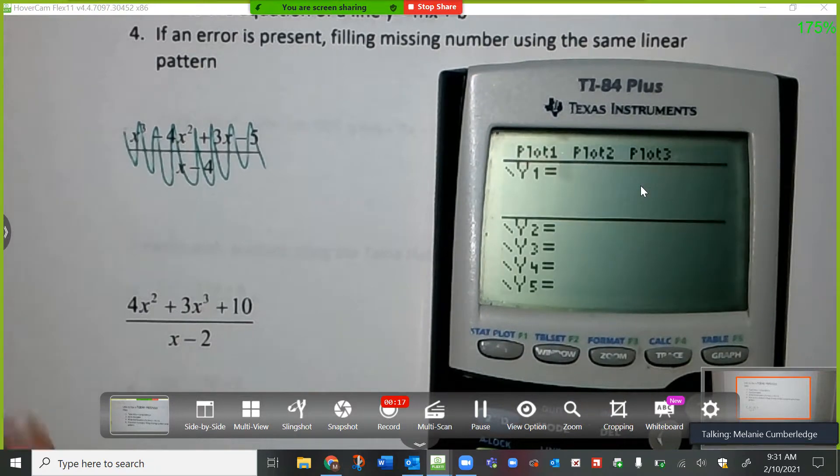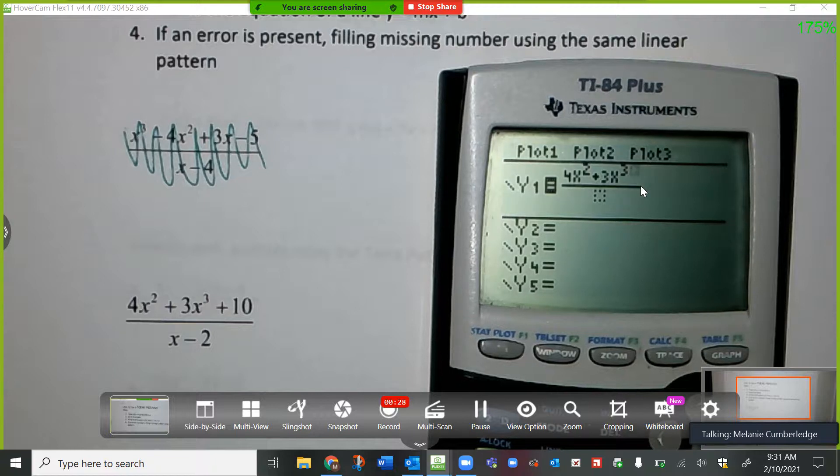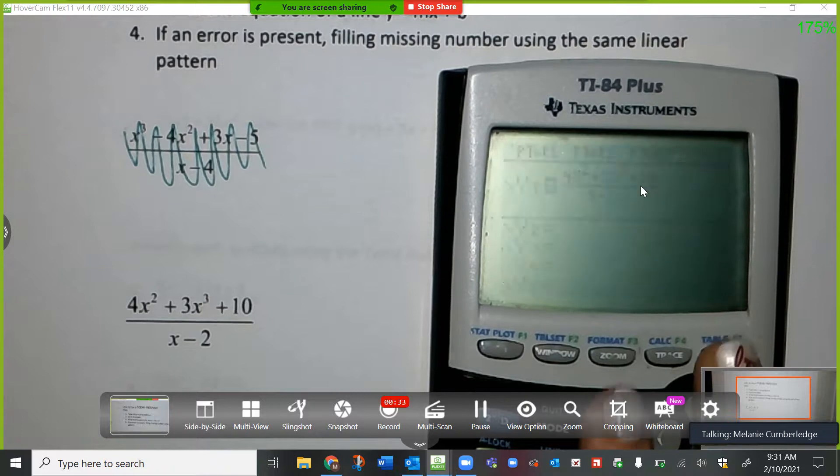So we're going to do alpha y equals enter and you're going to type 4x squared plus 3x, maybe this is not a good example either, to the third power, plus 10 over x minus 2. Let's see what happens.